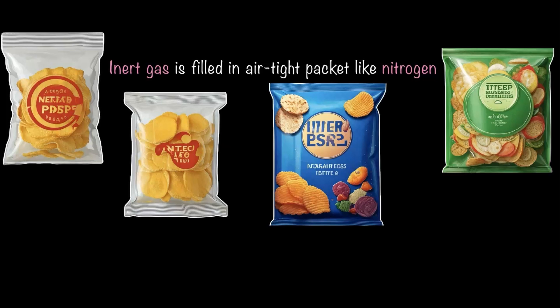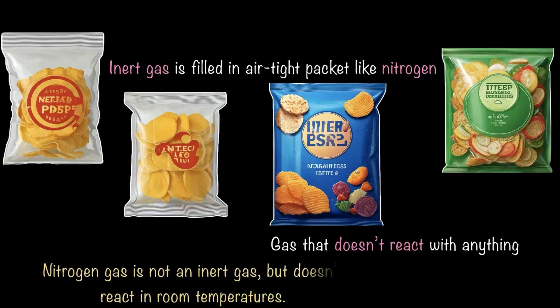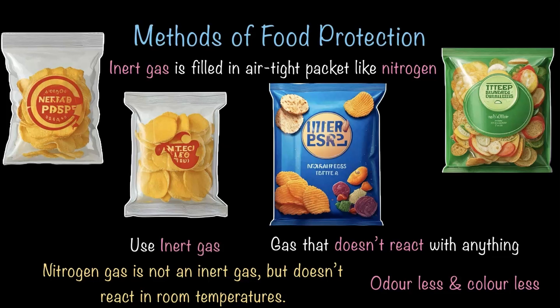Why do they add nitrogen gas or any other inert gas? Most importantly, what is inert gas? It's a gas that doesn't react with anything. While nitrogen is not officially an inert gas, it behaves like one under normal room temperature, and it is odorless and colorless — very convenient to use. Nitrogen gas helps protect the chips by keeping them from getting stale and stops the oil in the chips from reacting with oxygen.